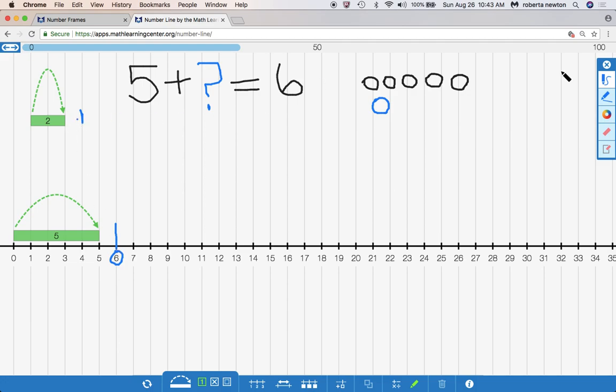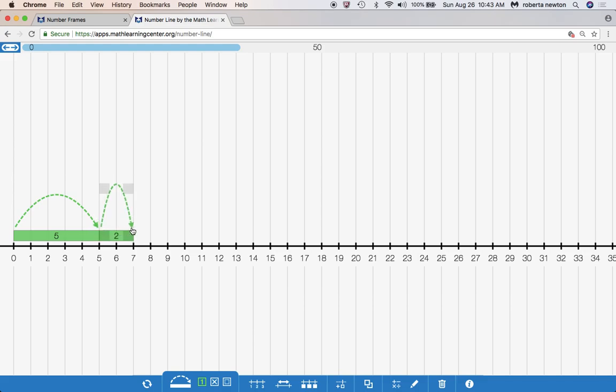So let's see how many jumps we would have to do. Oh, we would only have to do one jump. Five and then six.